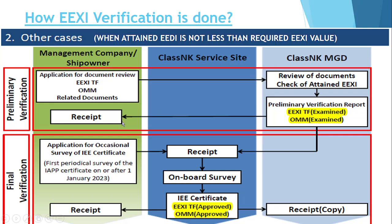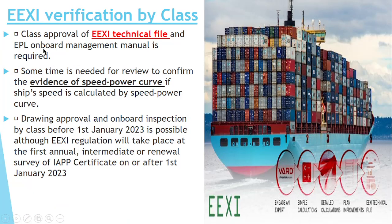In the other case, first they carry out the preliminary verification in which you submit the EXI technical file, on-board manual, and other documents. The class will examine them, then go on board, carry out the on-board survey, issue the certificate, and approve the EXI technical file and on-board manual. For an examination, if asked what documents are involved in the EXI, you need to mention at least three documents: the EXI technical file, the on-board management manual, and the IEE certification.